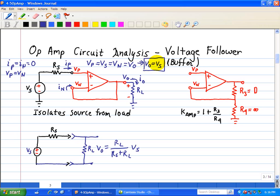Now let us note that we can look at this relationship VO equal to VS as a special case of a non-inverting op-amp. Here, our R3 is equal to 0, and our R4 is really open or infinite resistance.